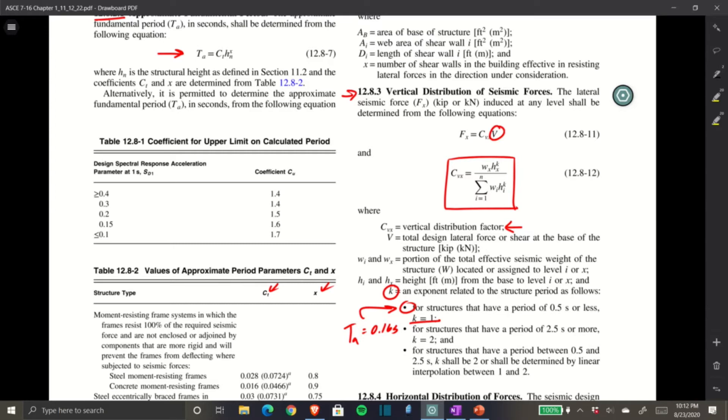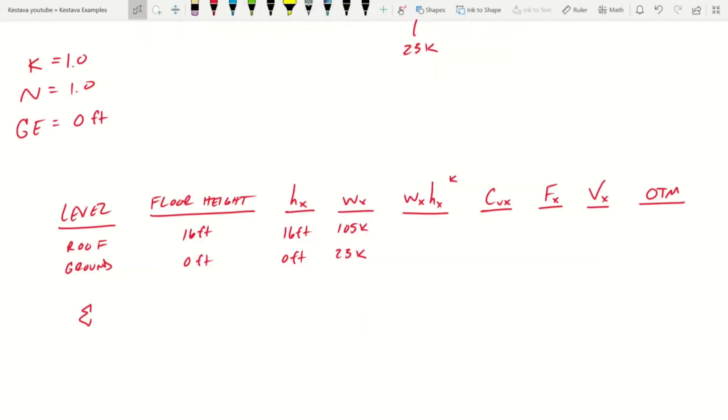That's why I'm tabulating it back in our calculations, because we're going to be doing this. And it's just a lot simpler if you tabulate it out. If you try to do it one by one, it starts to get a little confusing. For common practice, it's really good to use like an Excel spreadsheet to keep everything nice and tight and clean. So all right, so wxhx k, that gets us, and we know k is just 1.0. So it's just wx times hx. So 16 times 105. That gets you 1680. And then we know hx is 0. So hx is 0. So for ground, it's just 0.